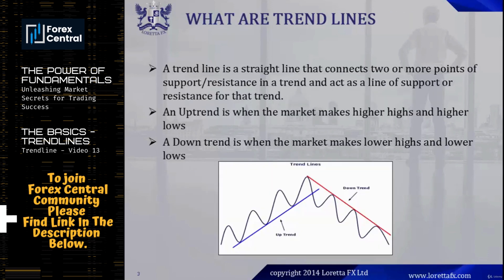A trend line is a straight line that connects two or more points of support or resistance in a trend, and a trend line may act as a support or resistance for a trend.